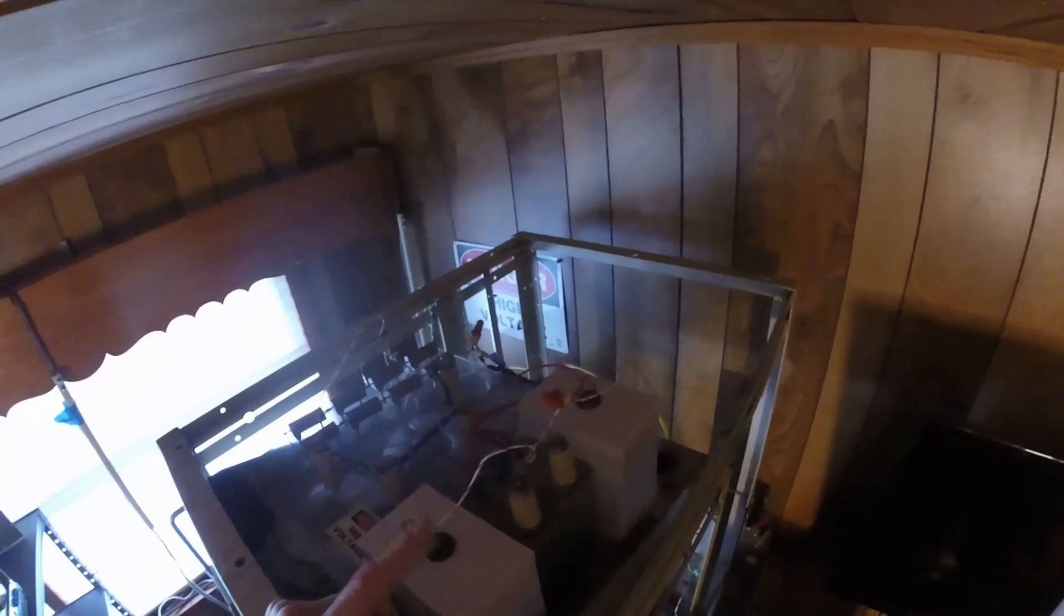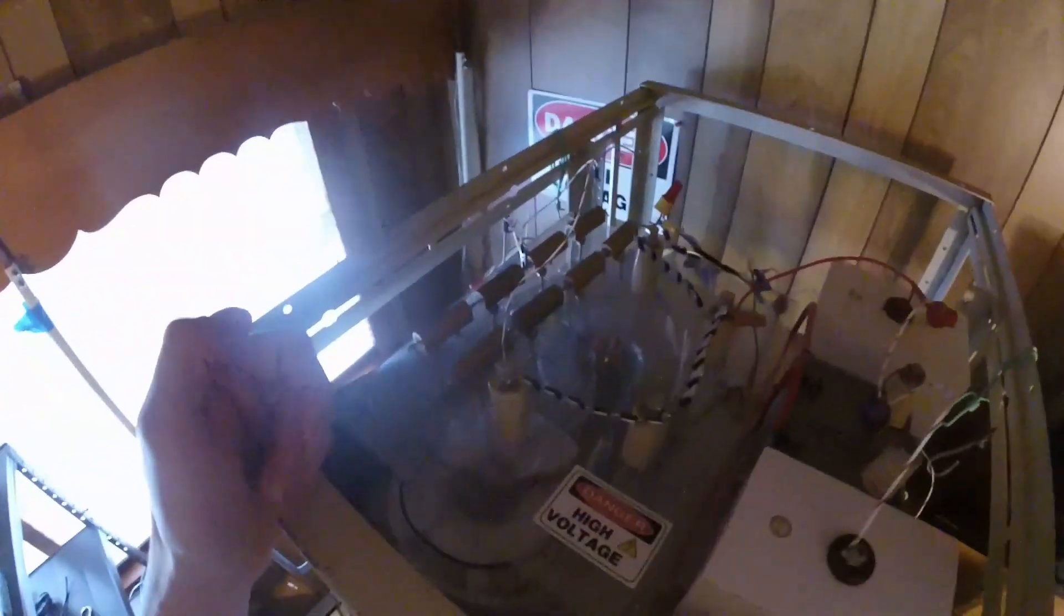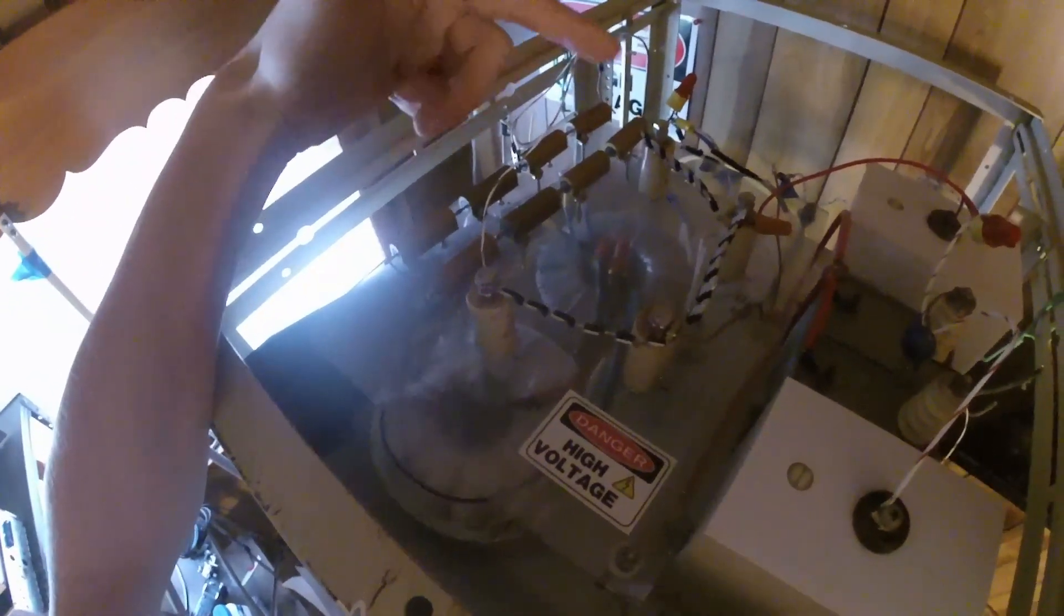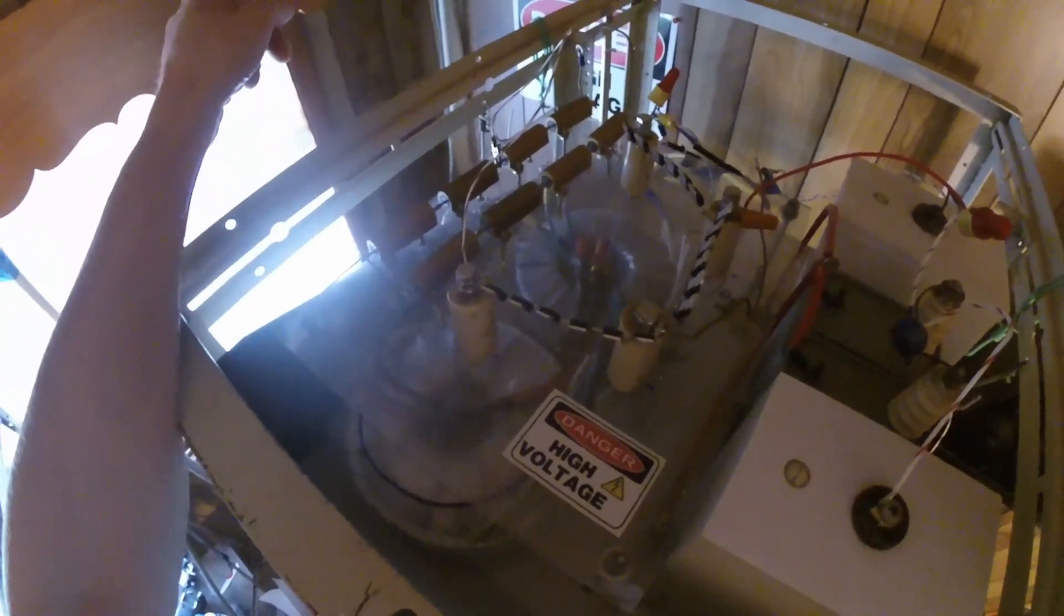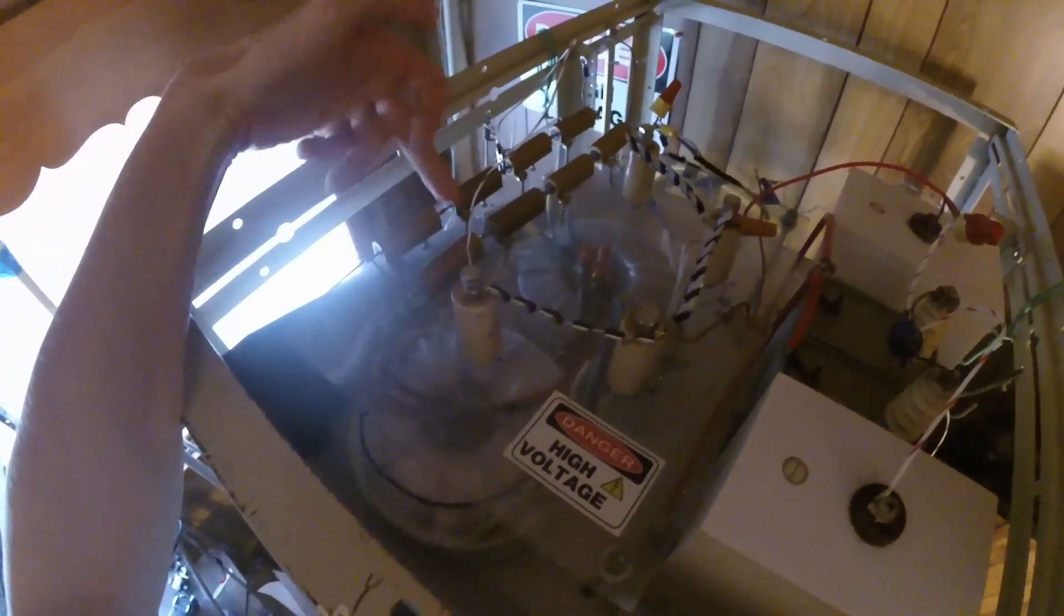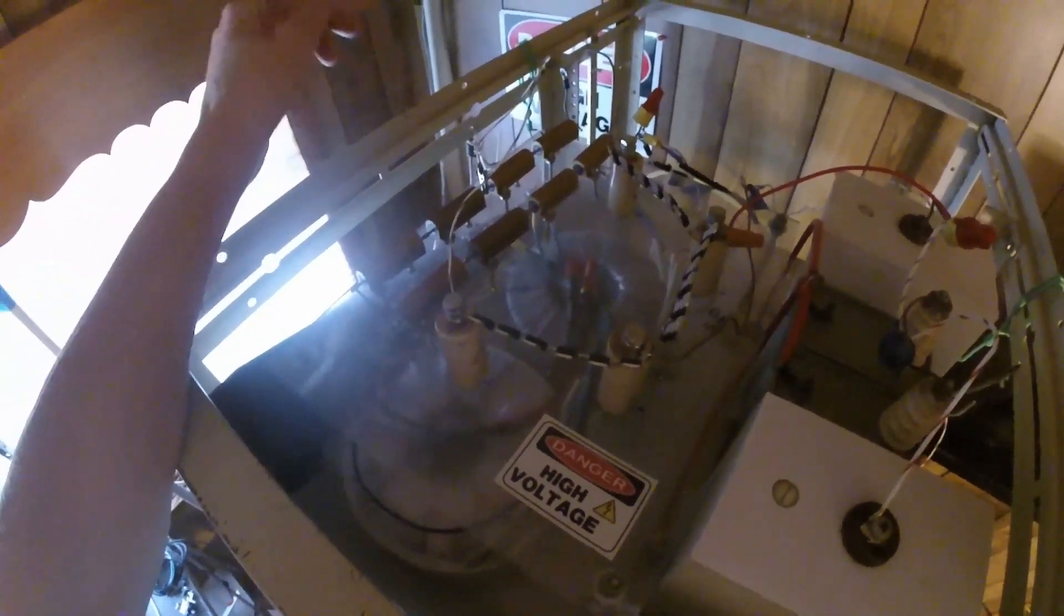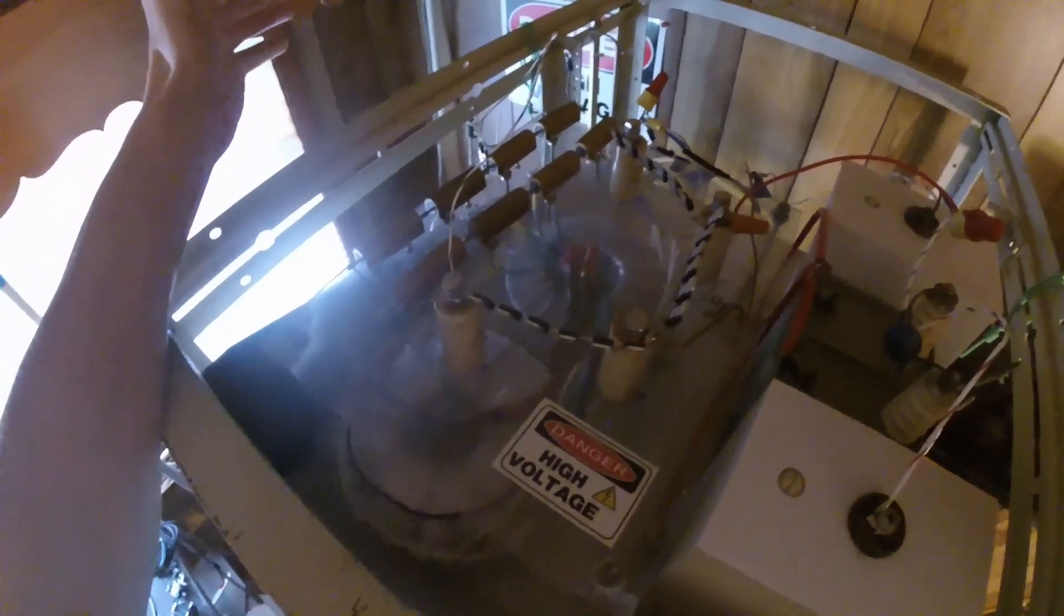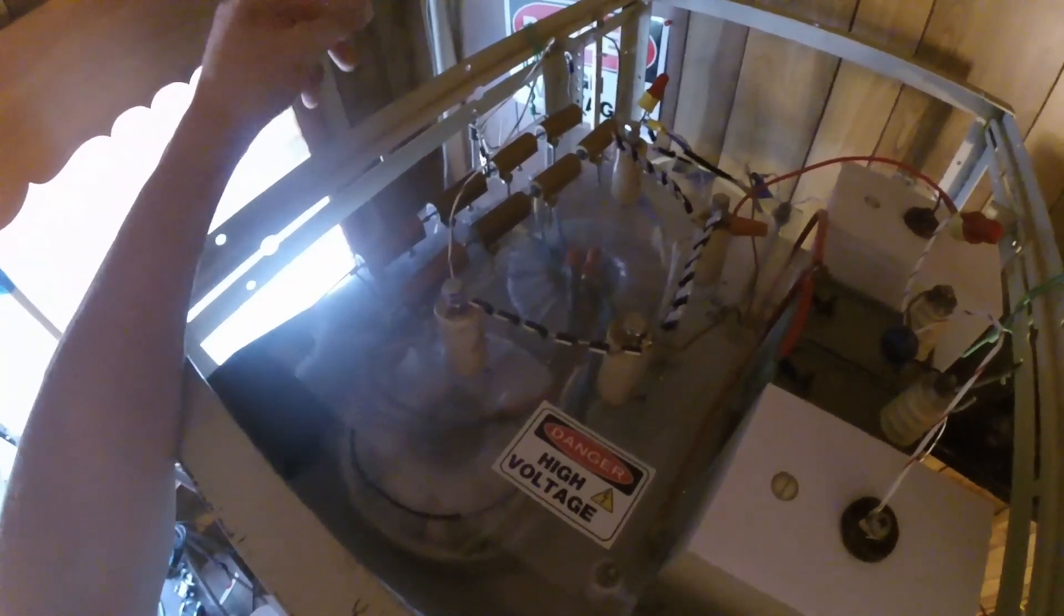I'm feeding high-level audio into my modulation transformers, which I think you can see underneath this Lexan. There's two toroidal power transformers under there made by a company called Antec. Those are my modulation transformers. This conglomeration of capacitors you see here represents my DC blocking cap. This has an extremely high voltage rating on it. All these capacitors are in parallel.